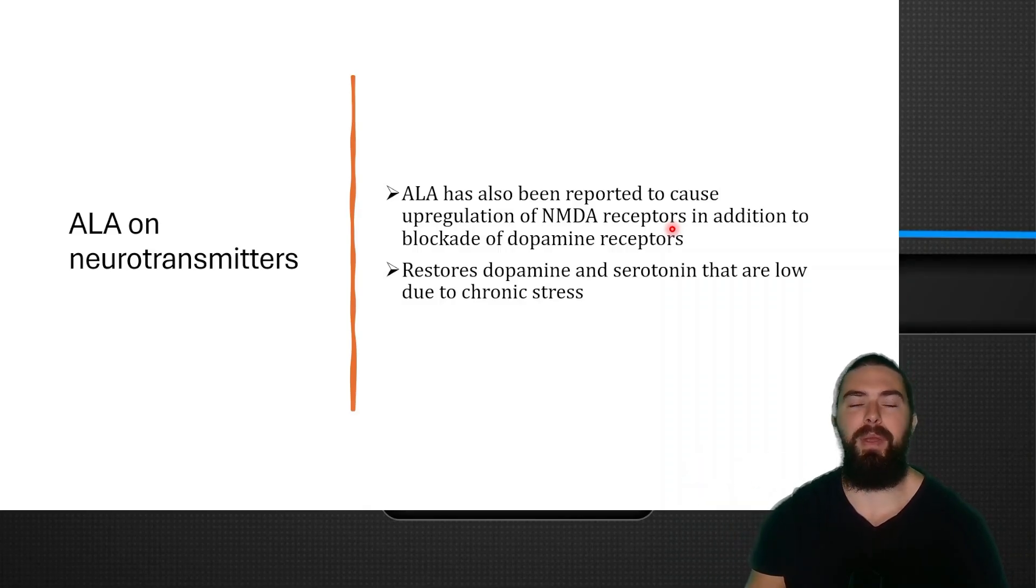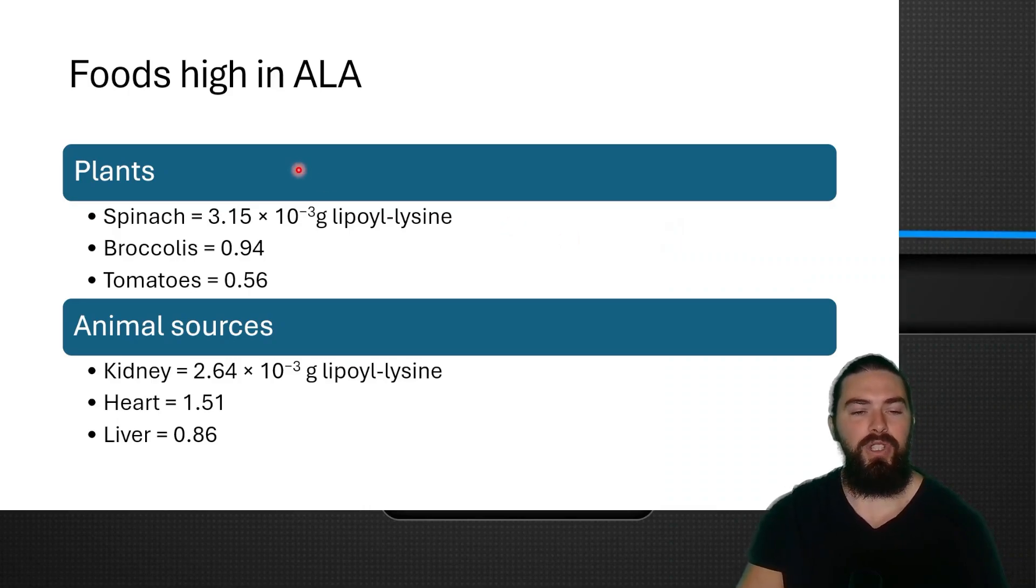Foods high in alpha lipoic acid: in plants you have spinach, broccoli, and tomatoes—clearly spinach is the denser source. In animal sources we have kidney, heart, and liver. If you want to get a lot of alpha lipoic acid from food, animal foods is going to be my preference because you can eat a lot more heart than you can eat spinach. A lot of people would eat maybe like 20 grams of spinach per day, but you can easily eat like a pound of heart per day, so you can easily get a lot more alpha lipoic acid from organ meat than you would from veggies.